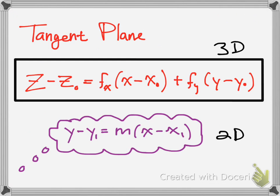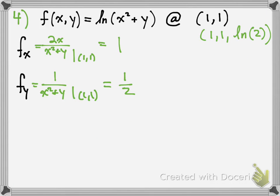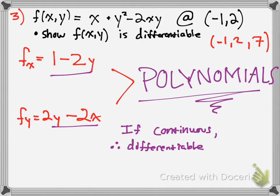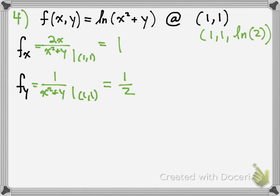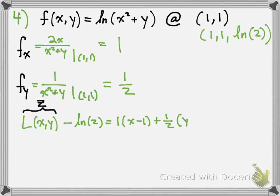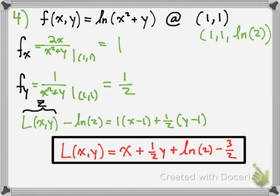Going back to the formula, for linearization you write L(x, y) instead of z. Plugging in: L(x, y) minus ln(2) equals 1 times (x minus 1) plus 1/2 times (y minus 1). Simplifying, you get L(x, y) equals x plus (1/2)y plus ln(2) minus 3/2. That is the linearization of this function.